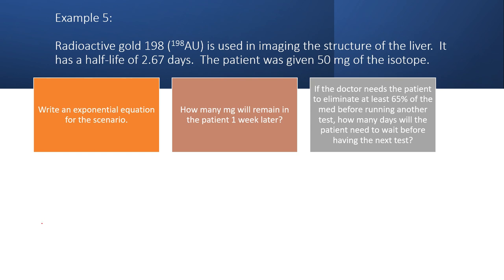It has a half-life of 2.67 days. The patient was given 50 milligrams of the isotope. So it's tempting when we're reading a word problem to try to use all the numbers, but in this problem, the gold 198 or this 198 AU, this is all a name. So these are not numbers that we're going to use in the problem.